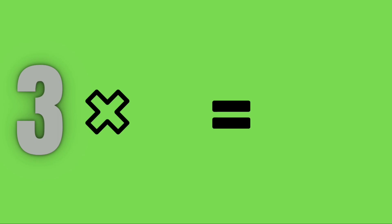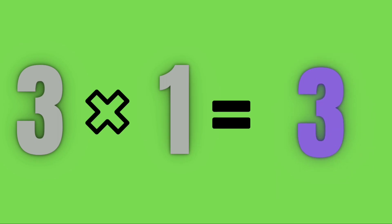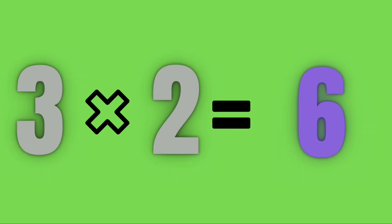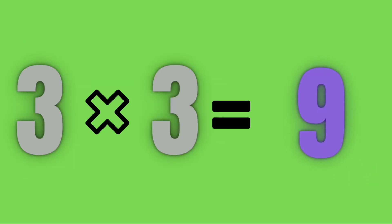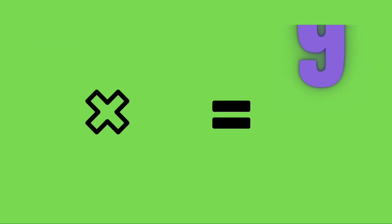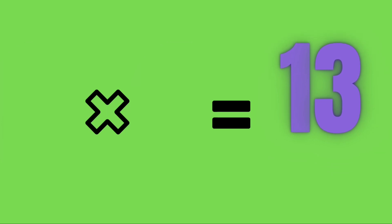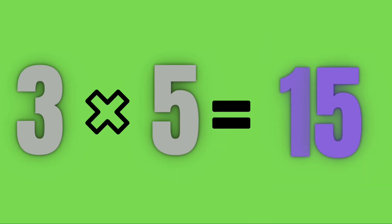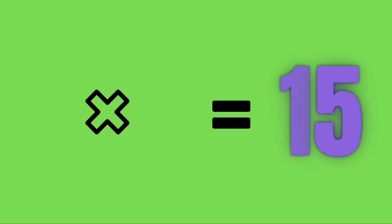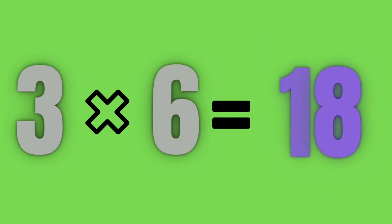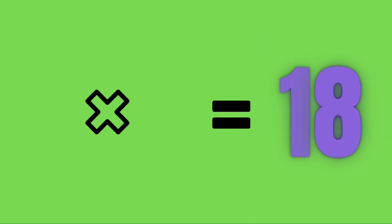Learn again. Three ones are three. Three twos are six. Three threes are nine. Three fours are twelve. Three fives are fifteen. Three sixes are eighteen.